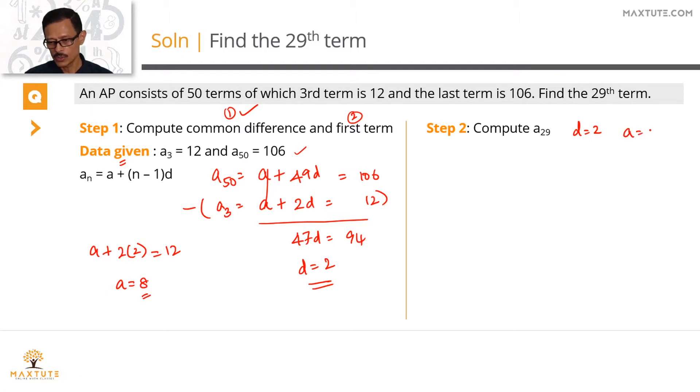So you found out D, we have found out A. Plug in these values in this formula, AN equals A plus n minus 1 into D. So what is A29? A29 will be the first term plus 29 minus 1, which is 28, into D. A is equal to 8, D is equal to 2, so 28 times 2, 56 plus 8 equals 64. So the 29th term is 64. Probably should have taken you a total of 45 seconds to a minute to get to this answer.